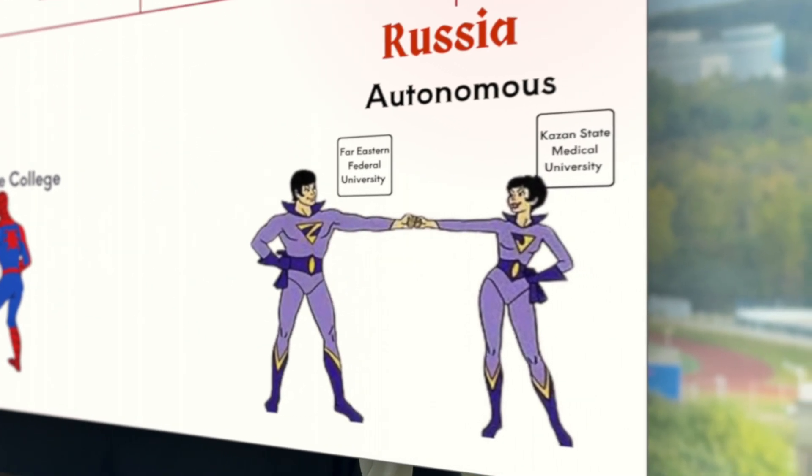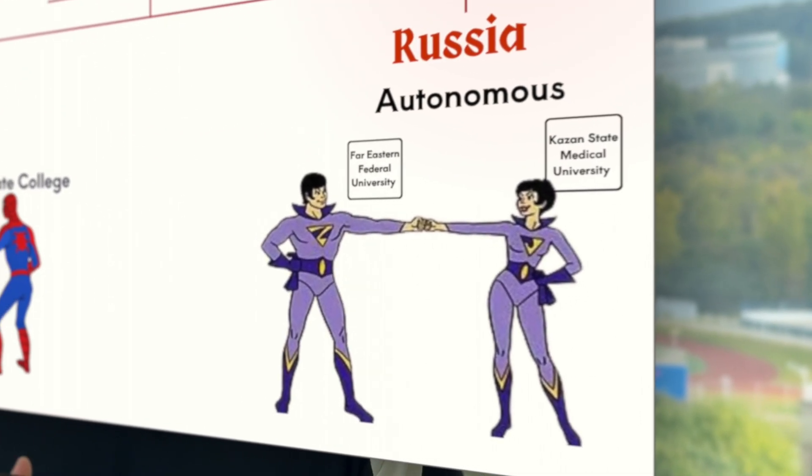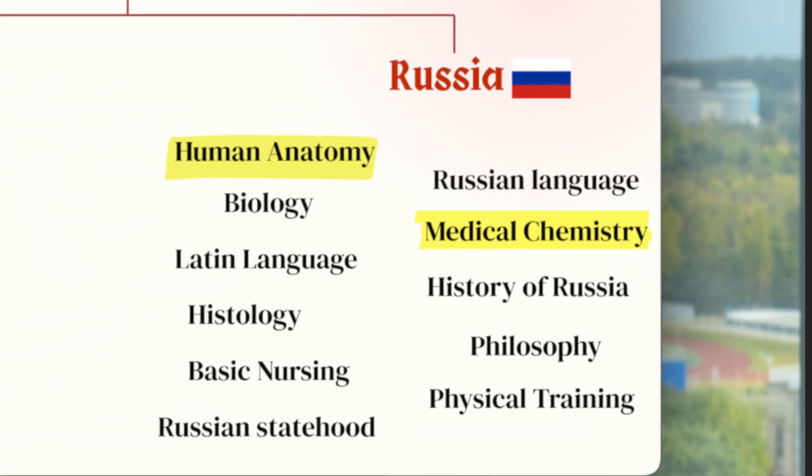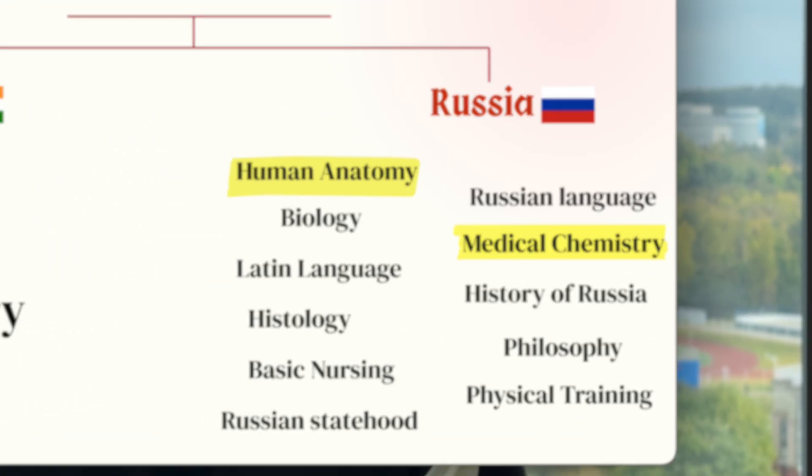In Russia, colleges and universities are more autonomous. Each university can decide what subjects to include in first year, how to divide exam and credit subjects, and even the teaching approach differs a little. That's why you will see extra subjects in Russia like philosophy, physics, informatics, and Russian language alongside the medical subjects. Even the university fee and internal rules are set by the university itself, not by a single authority.